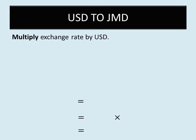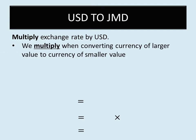When we convert from the U.S. dollar to the Jamaican dollar, we multiply. We multiply the exchange rate by the U.S. dollar amount. Our reason for multiplying is that when you're converting a currency of a larger value to a currency of a smaller value, you multiply. The Jamaican dollar has a smaller value than the U.S. dollar.